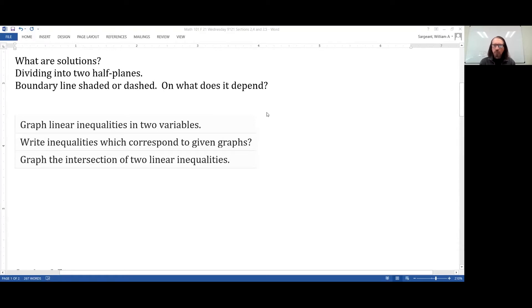So here are our objectives. Given a linear inequality in two variables, we want to graph them. Or, if we're given the graph, what was the linear inequality in two variables that produced it? And finally, look at the graph of the intersection of two linear inequalities. That can be of particular interest for those of you that are majoring in something business-related and going on to Math 220.